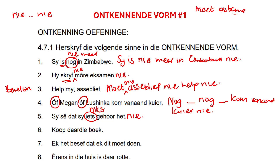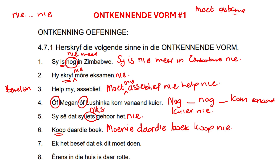Koop daar die boek. If something starts with the verb, it's a command. So we know we have to use 'Moenie'. We start with 'Moenie', the verb goes to the end, and 'nie' is at the end. We take out the verb and leave it for last, insert 'Moenie' in the front, 'daar die boek' remains the same, then bring back the verb and put 'nie' at the end. Moenie daar die boek koop nie.